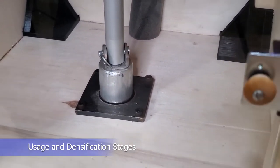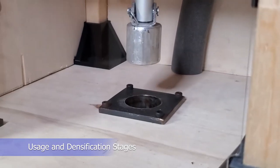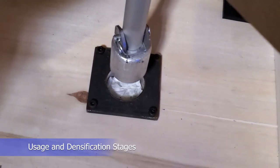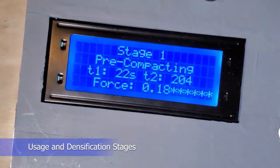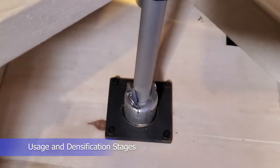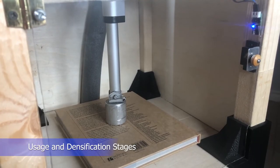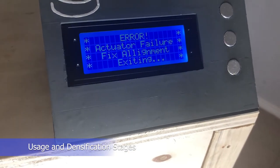Before Stage 1 begins, the linear actuator is fully retracted in case the appliance lost power mid-process due to accidental unplugging of the machine or a power outage in the home. In Stage 1, the linear actuator extends, pre-compacting the bags to remove air pockets and ensure optimal contact of the bags with the heated inner surfaces. In the event the entrance of the chamber is blocked or the piston is not aligned, the appliance's built-in safety feature will recognize the obstacle and immediately retract the linear actuator.